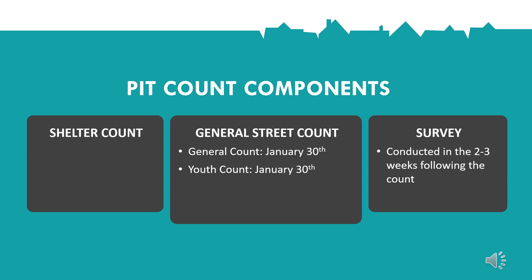This figure shows the different components the count includes to make sure all people experiencing homelessness are represented in the count. You will be participating in the general street count, which is highlighted in the middle box on this slide. The general street count is a visual count of people who are currently unsheltered and will take place between the hours of 8pm and 12am on January 30th. Slight start time modification is possible with prior approval. Timing and coordination are important to avoid duplication, so areas surrounding shelter locations should be counted first. Route timing is important and should be considered in pre-planning efforts. Rural regions and non-sheltered areas may also be subject to special arrangements.